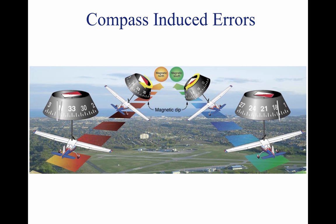This dip and weight causes two very noticeable errors: northerly turning error and acceleration error. The pull of the vertical component of the Earth's magnetic field causes northerly turning error, which is apparent on a heading of north or south. When an aircraft flying on a heading of north makes a turn toward the east, the aircraft banks to the right and the compass card tilts to the right. The vertical component of the Earth's magnetic field pulls the north-seeking end of the magnet to the right, the float rotates, causing the card to rotate toward west — the direction opposite the direction the turn is being made. If the turn is made from north to west, the aircraft banks to the left and the compass card tilts down on the left side; the magnetic field pulls on the end of the magnet that causes the card to rotate toward east, again opposite to the direction of the turn.